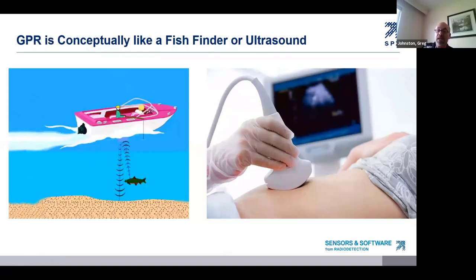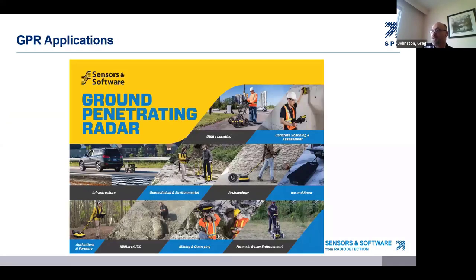Conceptually, GPR is like a fish finder or an ultrasound. Waves are sent into the water or a body and they reflect from objects in the subsurface to locate them. The difference is that fish finder and ultrasound technology uses sound waves or acoustic waves. GPR uses radio waves that travel much, much faster. There are many applications for ground penetrating radar, and the number one application around the world is really locating utilities — including non-metallic utilities that other methods miss.